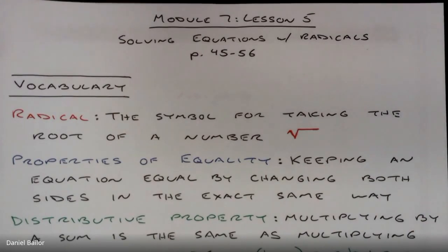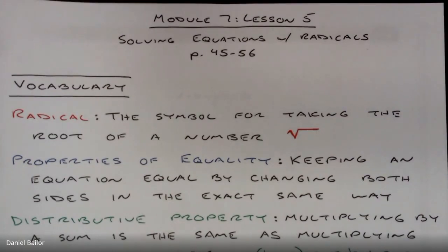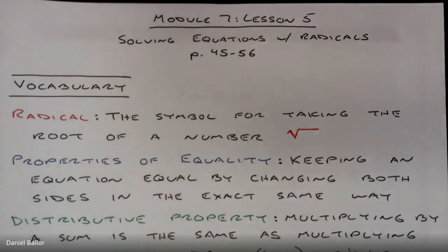We will have to use radicals to solve equations. It's just like what we've done before with all the properties of equality — the distributive property, the commutative property, the associative property. We're going to use all of our properties plus radicals to solve equations, finding what a variable equals.